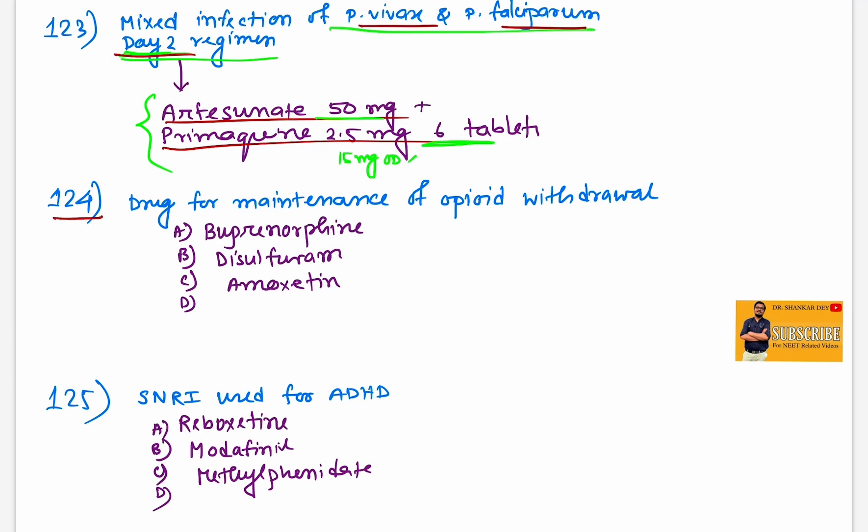Question 124: Drug for maintenance of opioid withdrawal is buprenorphine. The answer is buprenorphine.